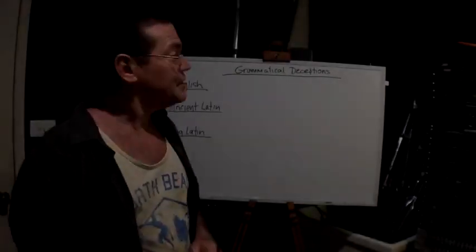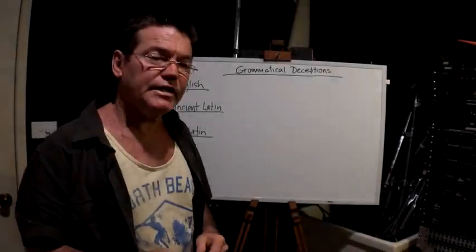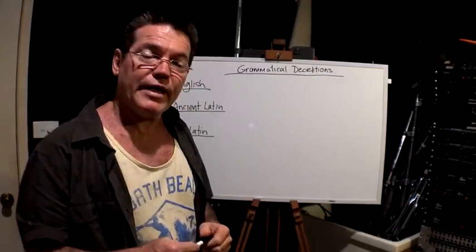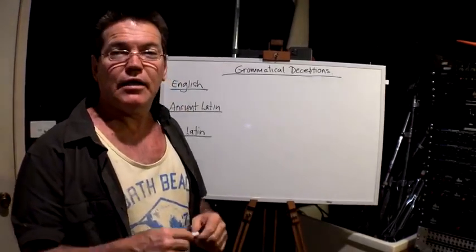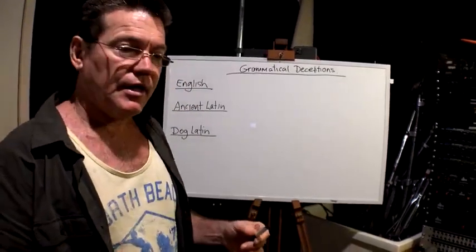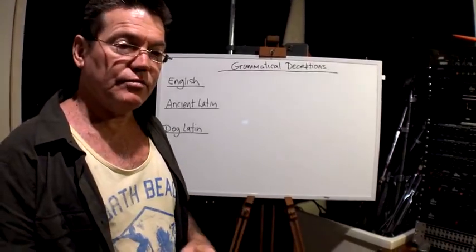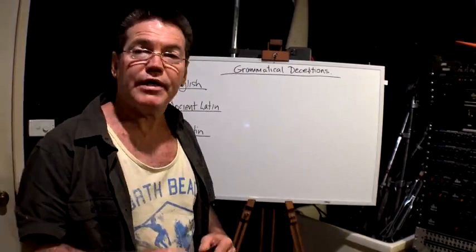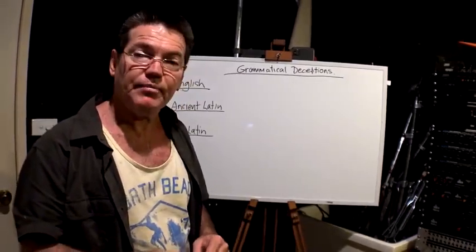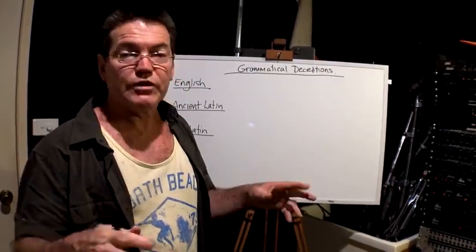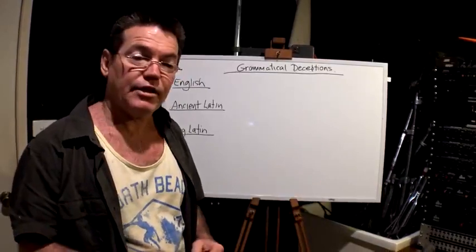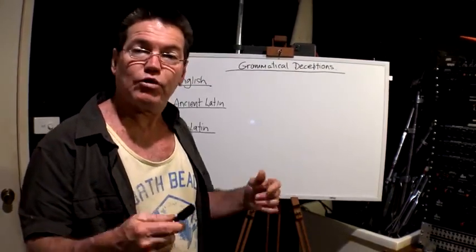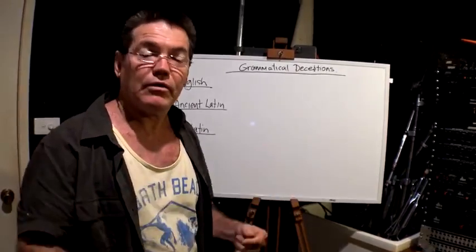Grammatical deceptions. In 1966 we lost the pound and we converted into dollars. The pound was a weighted note on silver — it was equivalent to one pound of silver. So it was a monetary system that operated on actual weights of metal.